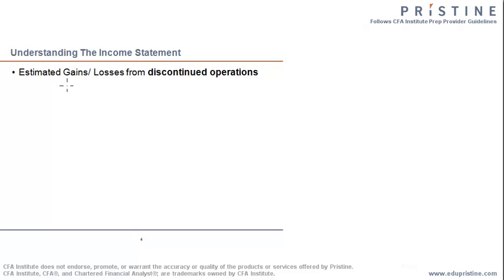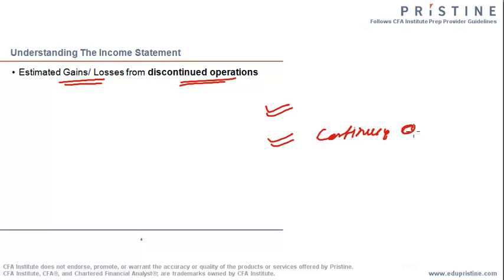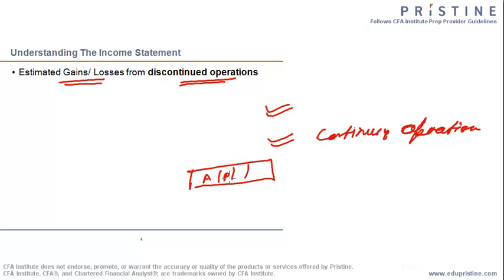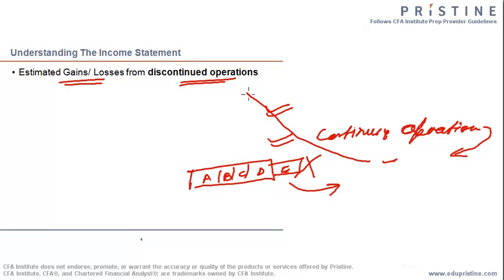Other than operating income, there are estimated gains and losses arising from discontinued operations. You put all income and expenses from continuing operations first, and after that you work out income or expenses related to an asset or division that has been sold off. For example, if a company has five divisions A, B, C, D, and E and decides to hive off E, all income and revenue for E would be shown separately after continuing operations, net of taxes, as income or loss from discontinued operations.